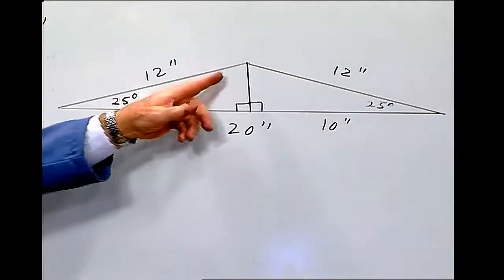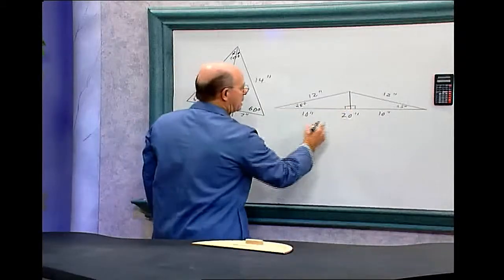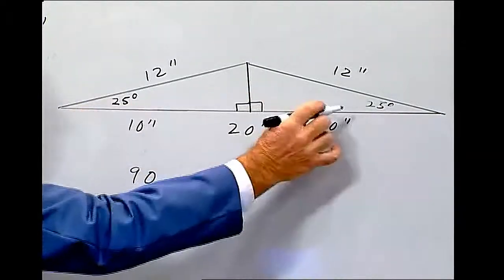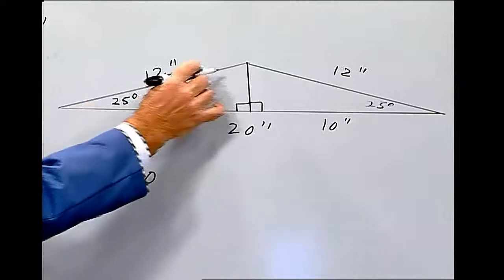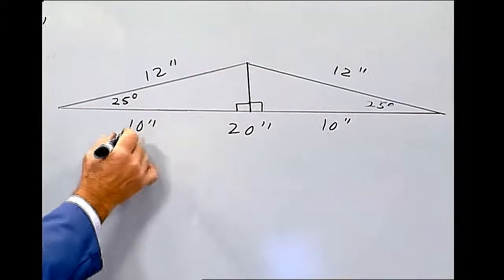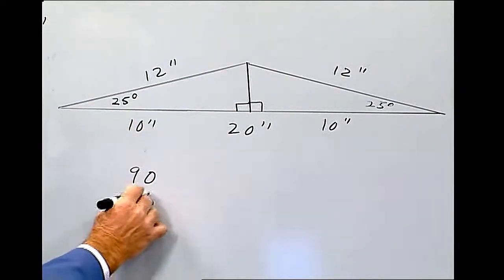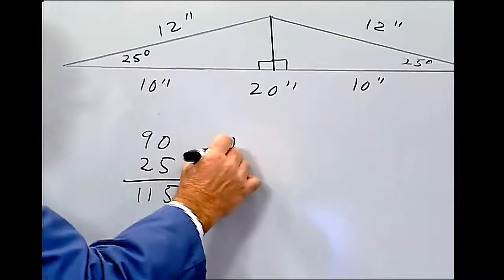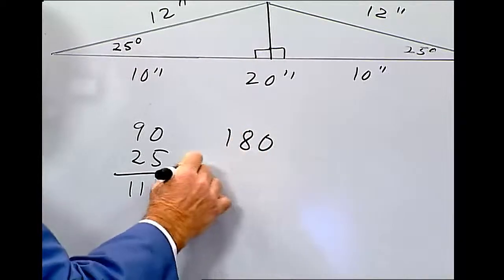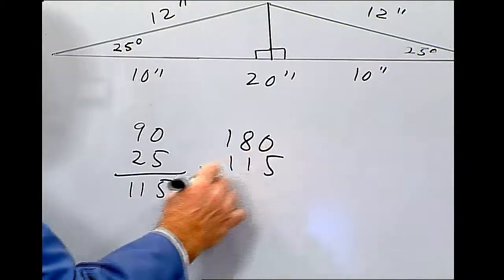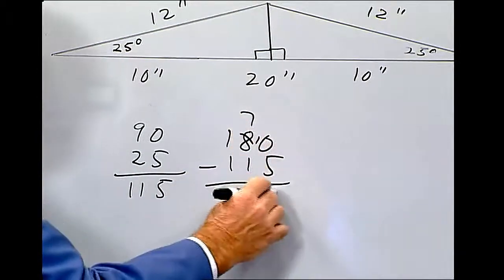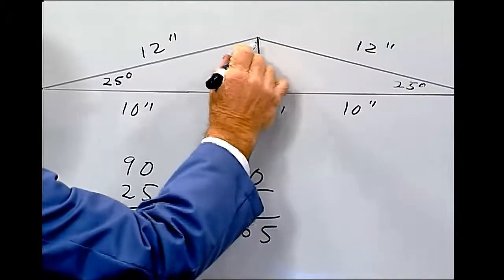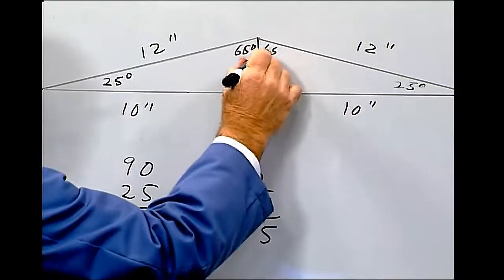To find that angle, this is 90. We can add both 25s together to make 50. We can do one side plus 25. 180 minus 115 is 65. So this will be 65 degrees, and this side will be 65 degrees.